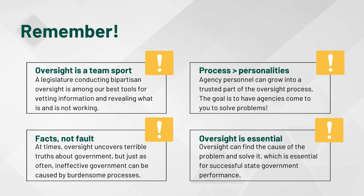Remember while doing this work the importance of civility and building relationships with agency personnel who can grow into a trusted part of the oversight process. Process cannot lose to personalities in oversight because the stakes are too high for those most vulnerable when the government fails to keep promises. The goal is to have agencies proactively come to you to solve problems, and a focus on the facts rather than who is at fault will help foster positive relationships. Oversight does at times uncover terrible truths about where government is failing or even breaking the law, but just as often the root cause of ineffective government can be burdensome processes focused on compliance rather than end-user experiences. Either way, performing oversight to find the cause and solve the problem is essential for successful state government performance.